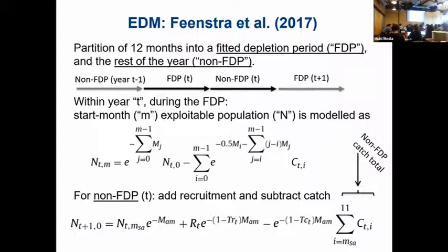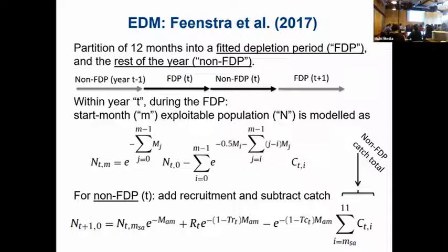The bottom equation puts that mathematically. At the end of the depletion period over which you're fitting, you want to account for the rest of the catch and recruitment, because you're assuming recruitment wasn't happening during the Fitted Depletion Period. So you need to add that before going to the next year, subtract the catch, and account for natural mortality.